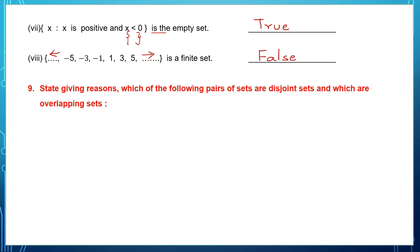Question 9: state, giving reasons, which of the following pairs of sets are disjoint sets and which are overlapping. Disjoint sets are two sets in which none of the elements are common — each set has entirely different elements. Overlapping sets are two sets in which at least one element is common to both.